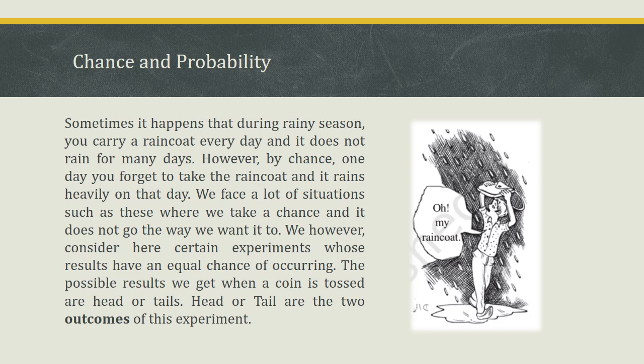Sometimes during rainy season, you carry a raincoat every day and it does not rain. However, by chance, one day you forget to take the raincoat and it rains. We consider experiments whose results have an equal chance of occurring. When a coin is tossed, the possible results are head or tail — these are the two outcomes of this experiment.